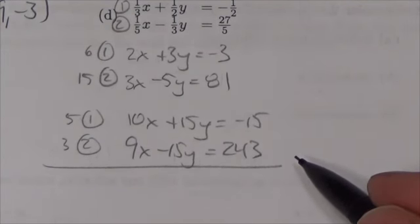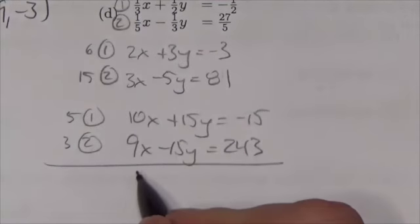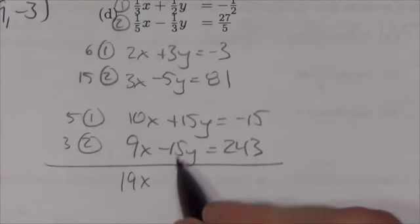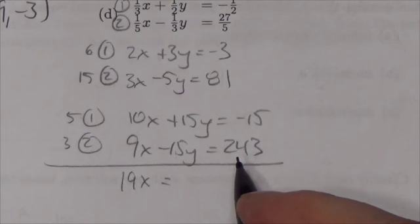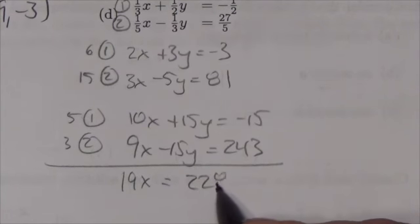So adding those gives 19x—the y terms cancel—and this equals 228.